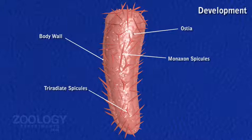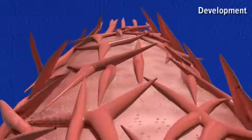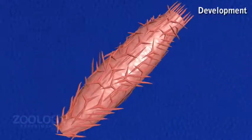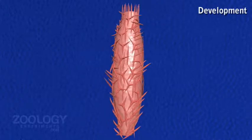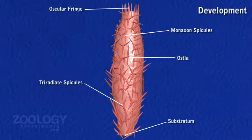The amoeboid cells form the pinacoderm and mesenchyme. The flagellated cells thus enclosed become the choanocytes. A central cavity or spongocoel appears, which increases in size and becomes lined by choanocytes.